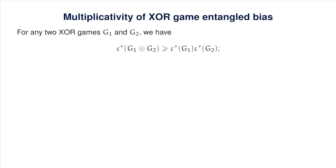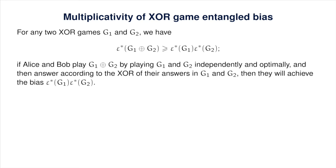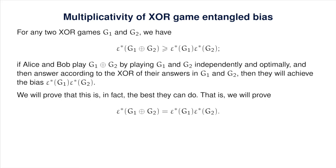For any XOR games G₁ and G₂, the entangled bias of G₁ XOR G₂ is at least the product of their individual entangled biases—achieved when Alice and Bob play the games independently and optimally, then answer by XORing their individual answers. We will now prove the reverse inequality using semi-definite programming duality, establishing that the entangled bias of G₁ XOR G₂ equals the product of the biases.